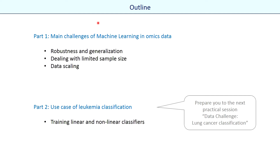First we will consider the main challenges of machine learning to take into account when working with omics data, such as robustness, dealing with limited sample size, and data scaling. To illustrate these points I shall use a real use case of a leukemia dataset, and in the second part I will show you some examples of how to train basic linear and non-linear models for leukemia classification.